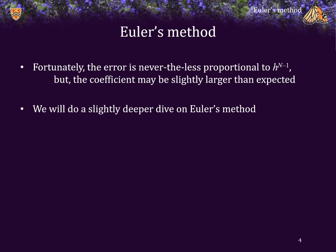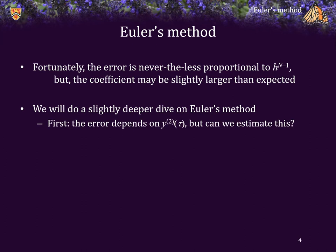So what we will do right now is we're going to do a slightly deeper dive into Euler's method, and we can assume similar results for Heun's and fourth order Runge-Kutta. One question we have to ask about Euler's method is that the error depends on the second derivative evaluated at some value tau. Can we possibly estimate this? Euler's method is equal to this function of t and y of t, which is given.